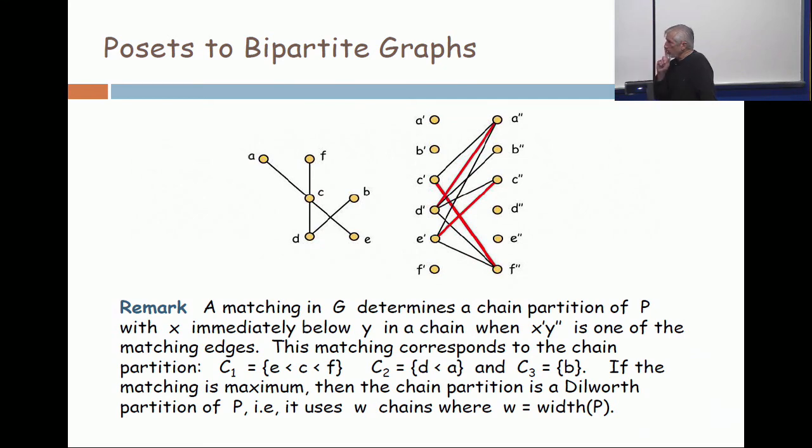Now, let's just observe, look at chain two. Chain two consists of D and A. Notice that they don't form a cover in the poset, but still D is less than A. Bottom line: a matching in the bipartite graph, independent of whether or not it's maximum, forms a chain partition in the poset.